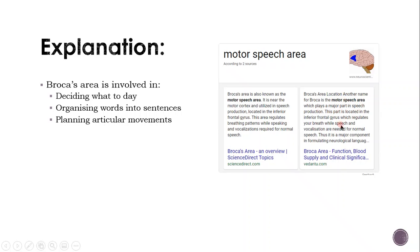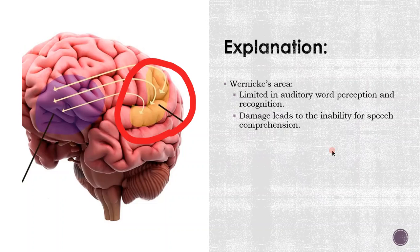Broca's area, the formative speech area, plays a major part in speech production and is located in the inferior frontal gyrus, which regulates breathing while speech and vocalisation are needed for normal speech — it is a major component forming neurological language. Wernicke's area, by contrast, is limited to auditory word perception and recognition, and damage to it leads to the inability for speech comprehension.